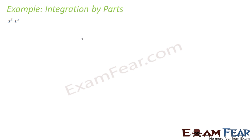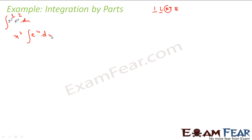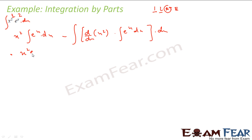Now let us solve some questions. We have to find ∫x²·e^x dx. Using ILATE: Inverse — not there; Logarithmic — not there; Algebraic — yes. So x² is first and e^x is second. This becomes x²·∫e^x dx minus ∫[d/dx(x²)·∫e^x dx] dx, which is x²·e^x minus ∫2x·e^x dx.